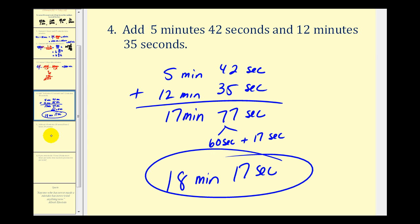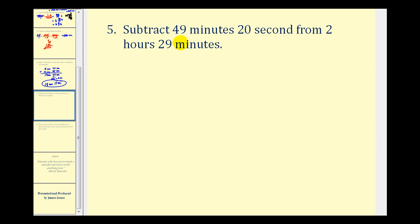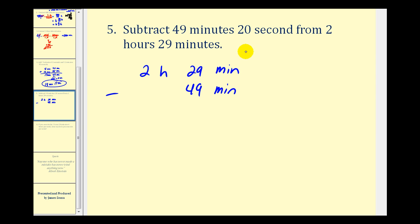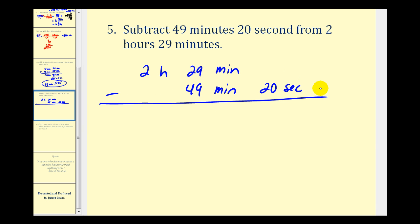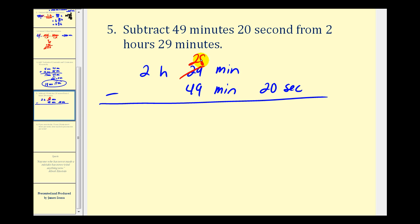Now let's take a look at a subtraction problem. We want to subtract forty-nine minutes twenty seconds from two hours twenty-nine minutes. Right away we'll have to borrow sixty seconds from the minutes, so twenty-nine minutes becomes twenty-eight minutes sixty seconds. Now we can subtract: sixty minus twenty gives us forty seconds.